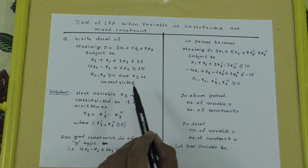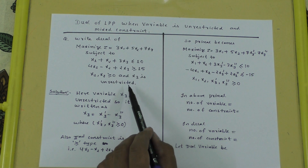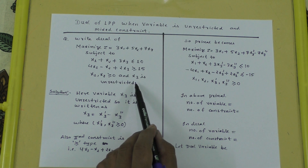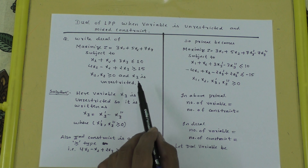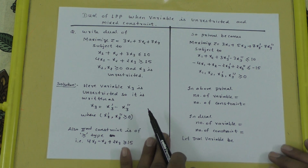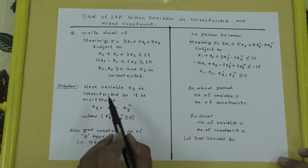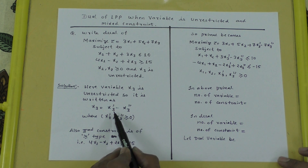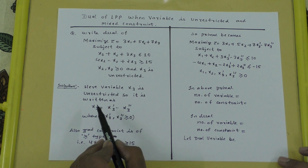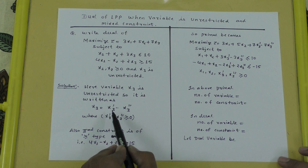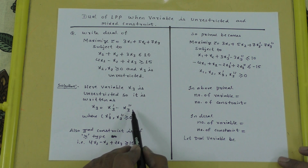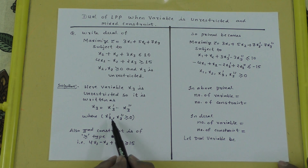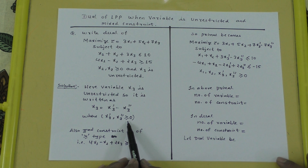The other issue is that variable x3 is unrestricted. To handle this, we substitute x3 with two non-negative variables. We write x3 equals x3' minus x3'', where x3' and x3'' are both non-negative variables.